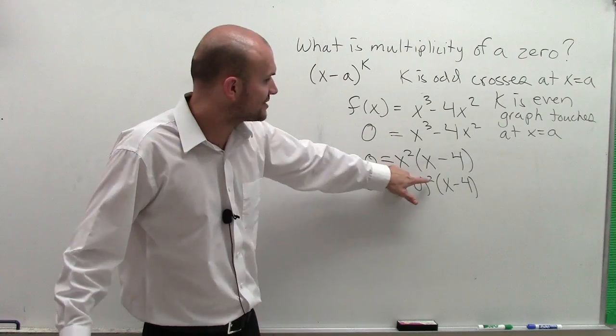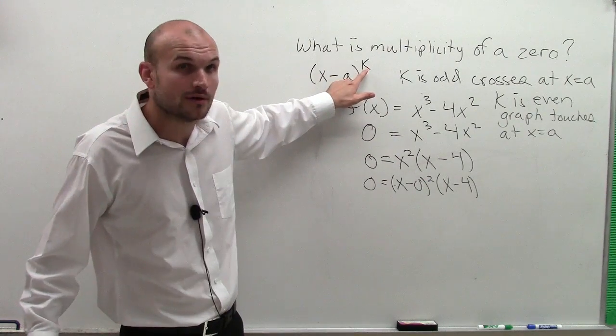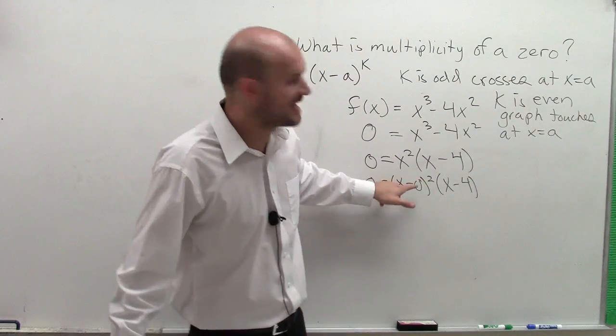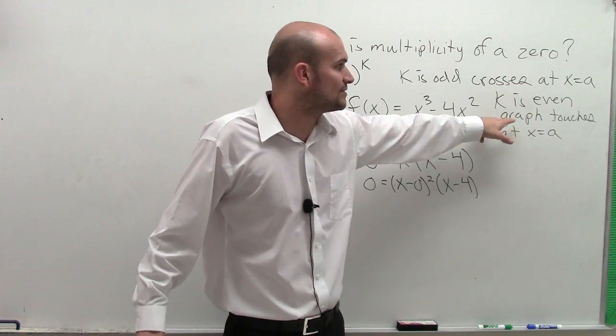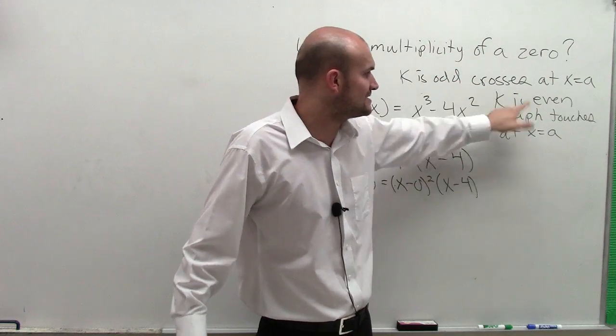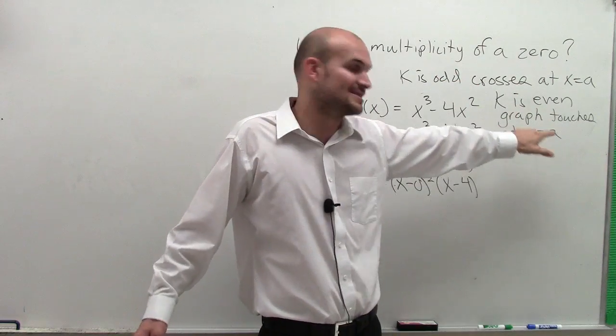So here you can see this exponent is 2. So at x = 0, at my intercept zero, my multiplicity is even. So the graph is going to touch at x = 0.